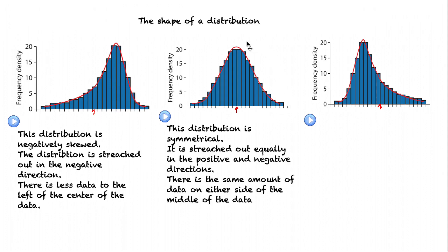This distribution is symmetrical. It's stretched out equally in both the positive and the negative direction. If I look at this centre mark, there's the same amount of data on either side. So that's the characteristics of a symmetrical distribution.